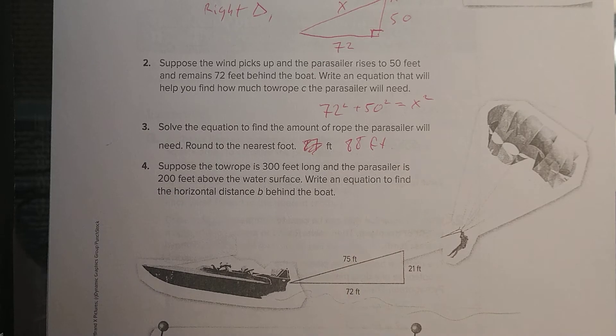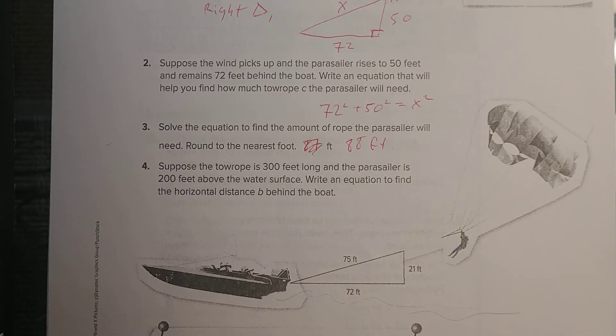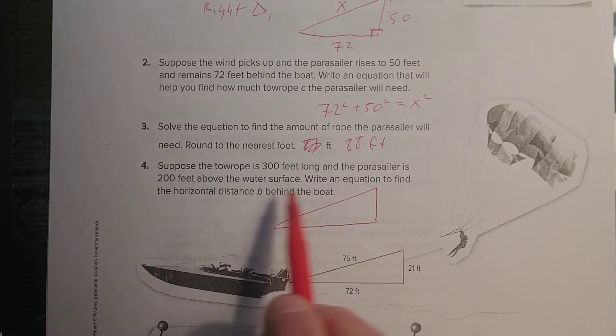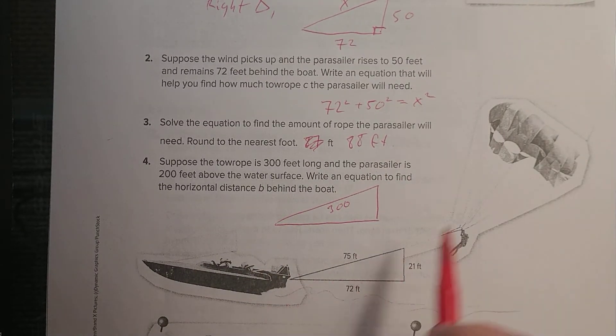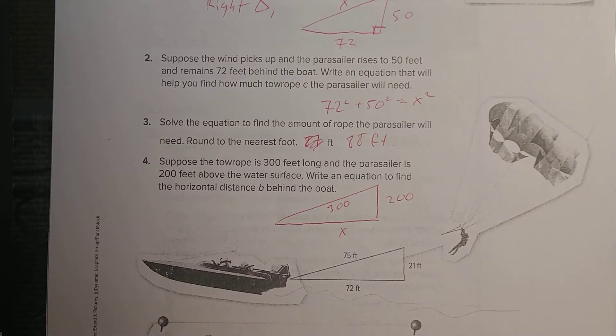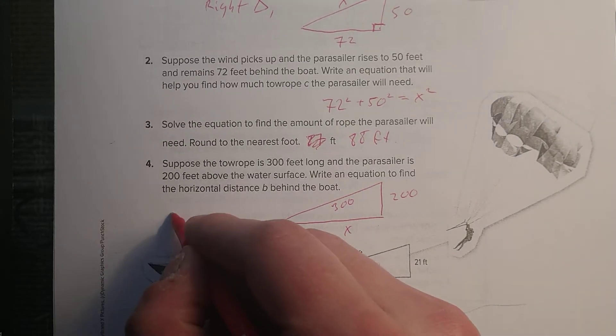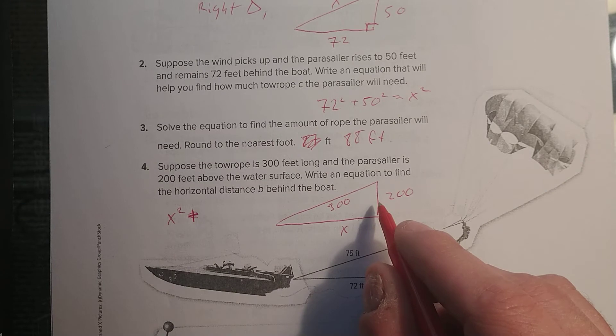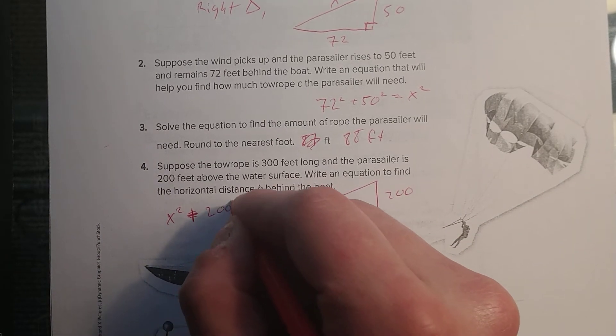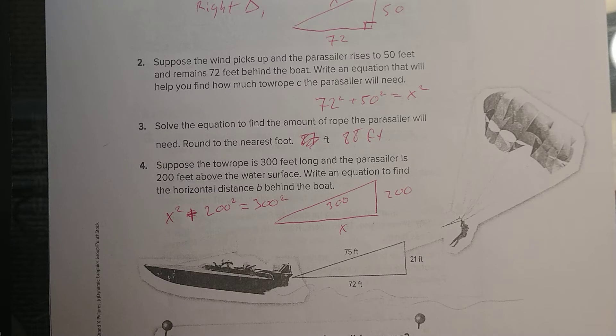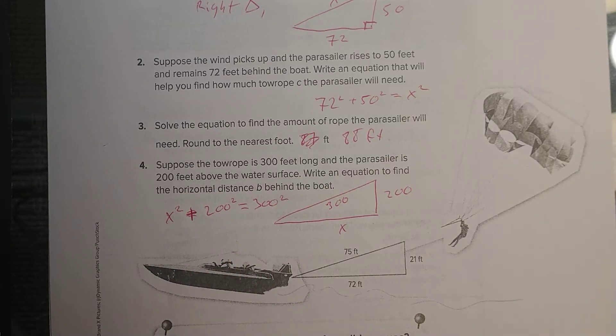So that's like a real world. So suppose the tow rope is 300 feet long. The parasail is 200 feet above the water surface. Write an equation to find the horizontal distance B behind the boat. So we're looking for the horizontal distance. So now for this one, suppose the tow rope is 300 feet. So it would be 300 feet, and we know that this is 200. So now we're looking for X. All right. So our equation for this would have been X² plus 200² equals 300². Like that. So that's how it would look. And then to solve this, this is just a one-step equation.